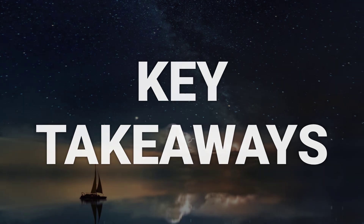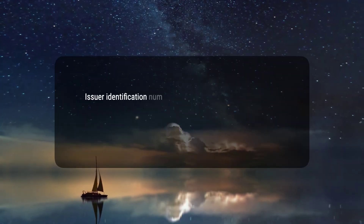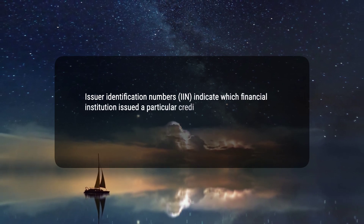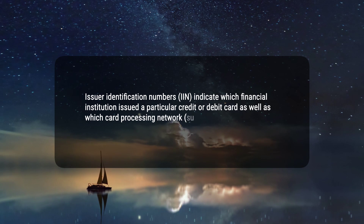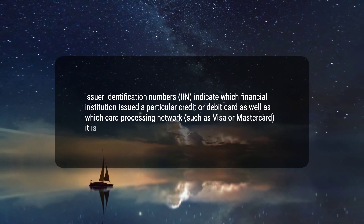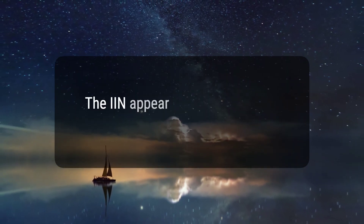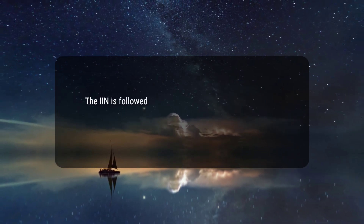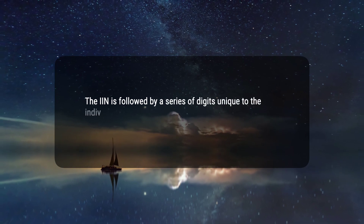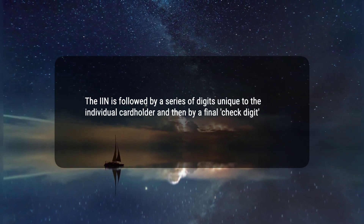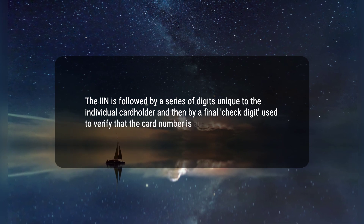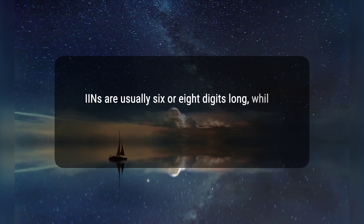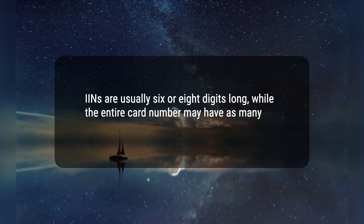Here are four key takeaways. 1. Issuer identification numbers (IIN) indicate which financial institution issued a particular credit or debit card, as well as which card processing network, such as Visa or MasterCard, it is part of. 2. The IIN appears as the first set of digits in the card number. 3. The IIN is followed by a series of digits unique to the individual cardholder, and then by a final check digit used to verify that the card number is authentic. 4. IINs are usually 6 or 8 digits long, while the entire card number may have as many as 19 digits.